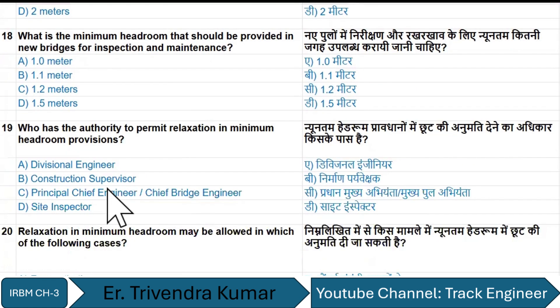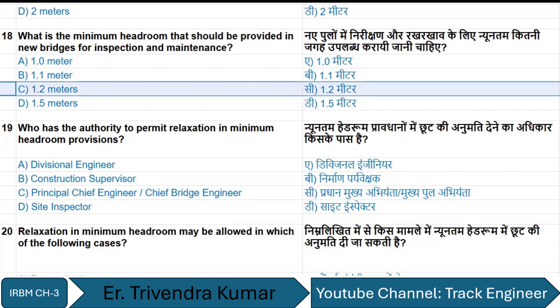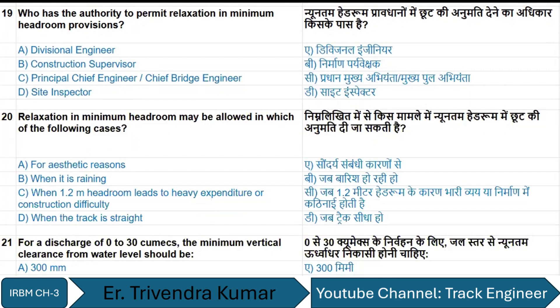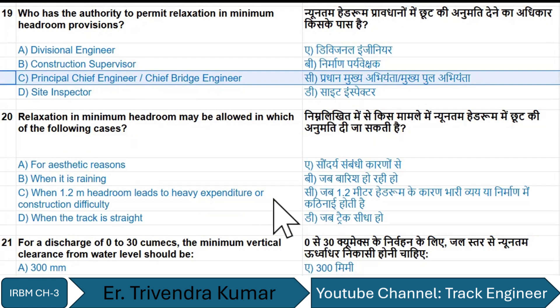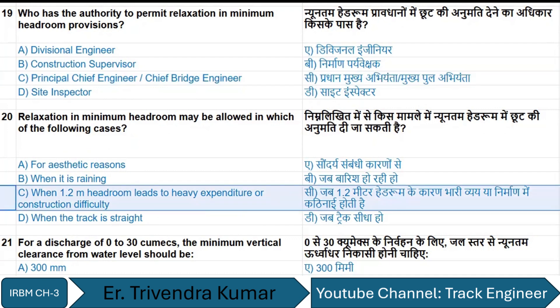The headroom that should be provided in new bridges for inspection and maintenance is 1.2 meters. The authority to permit relaxation in minimum headroom provision is the Principal Chief Engineer or Chief Bridge Engineer. Relaxation may be allowed when 1.2 meter headroom leads to heavy expenditure or construction difficulty.